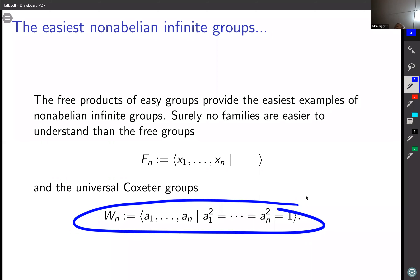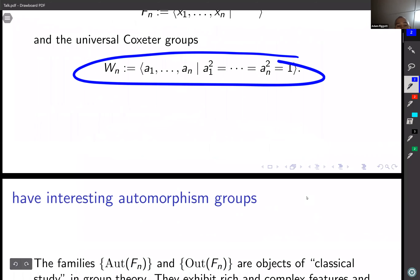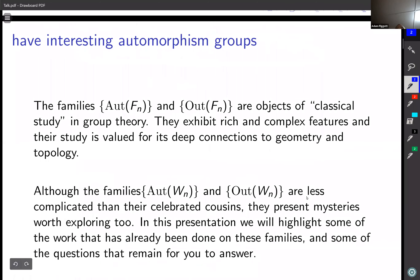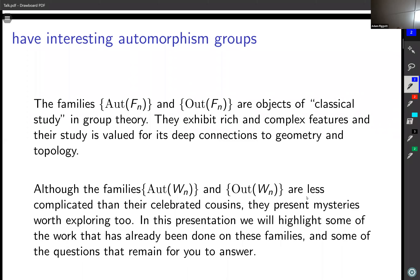If you're interested in automorphism groups of groups and you ask where should I start, these are pretty natural places to start. My claim is that even though they are the easy infinite non-abelian groups, their automorphism groups are not easy and they have things left for us to figure out.